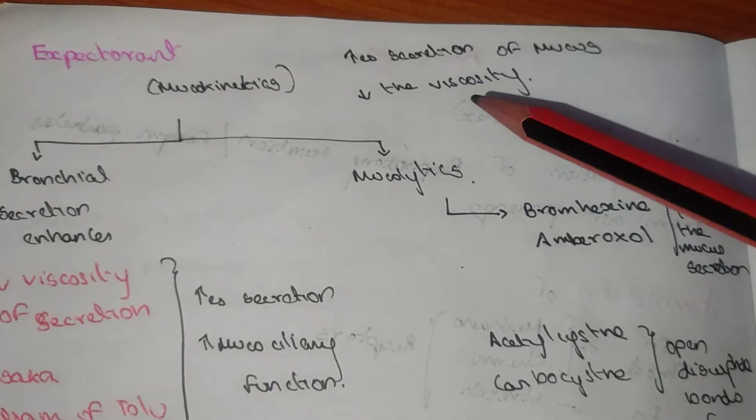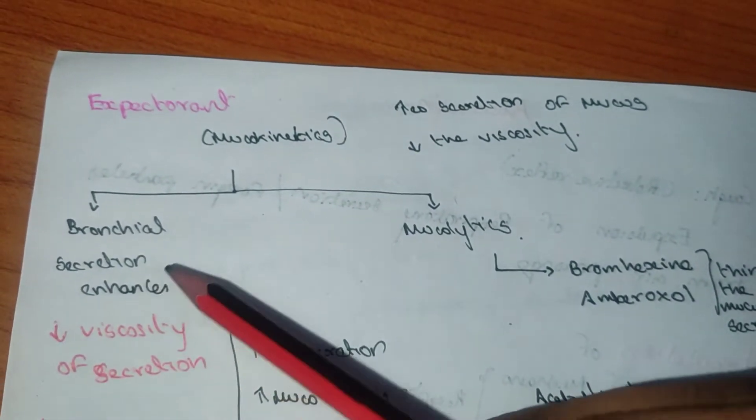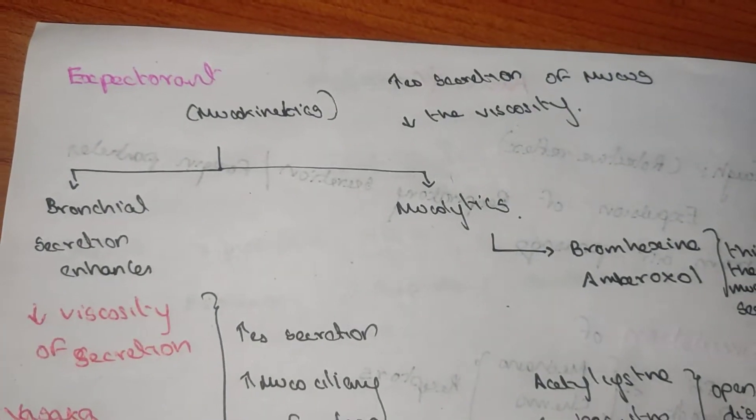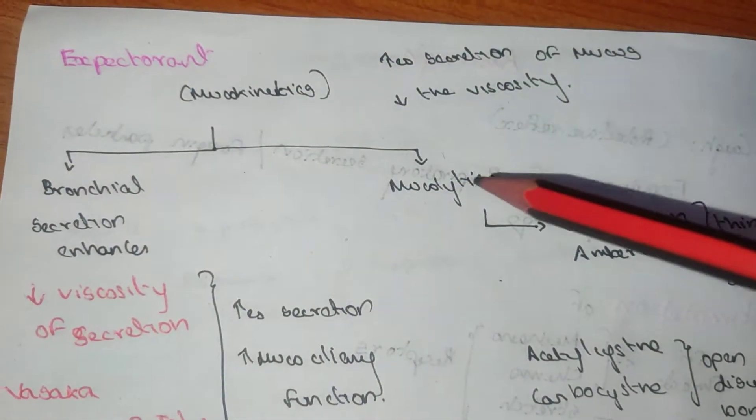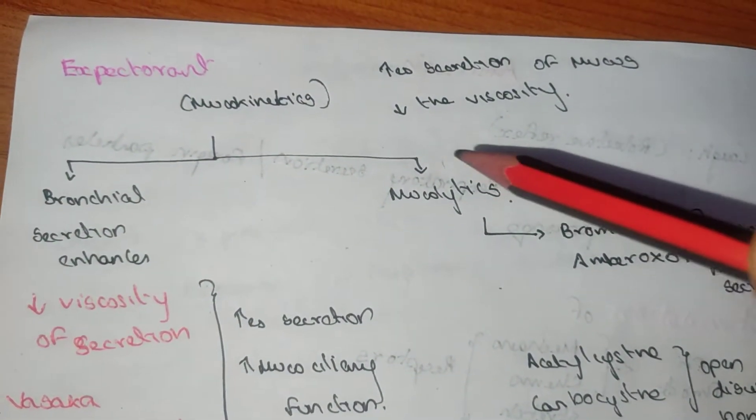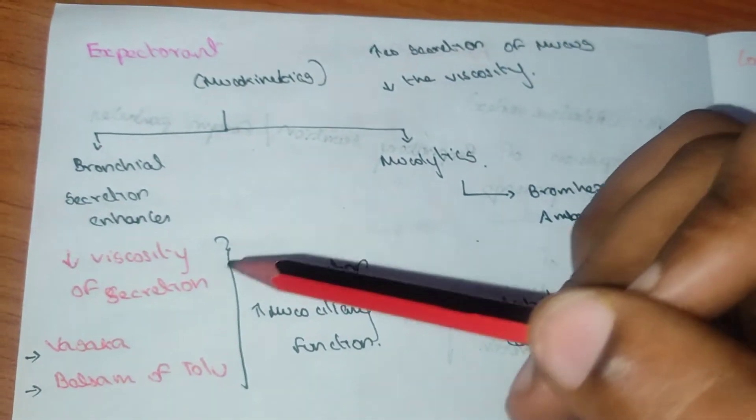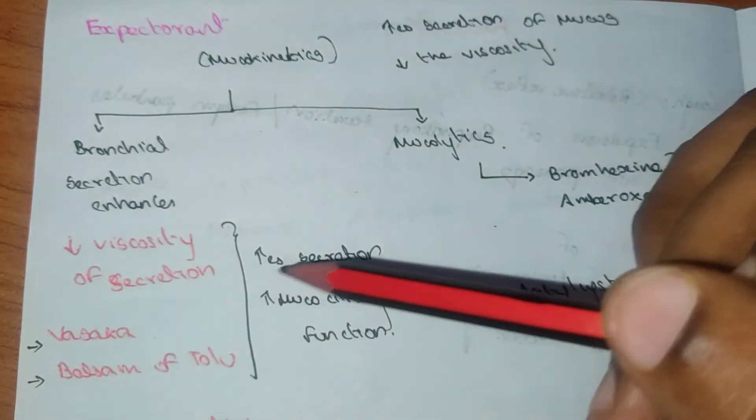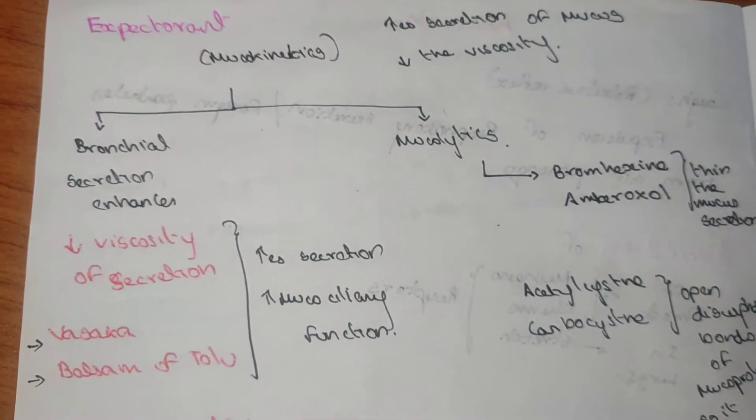In bronchial secretion, expectorant increases the bronchial secretion and decreases the viscosity, which is known as mucolytics. Bronchial secretion decreases the viscosity of the secretion, which are Vasaka and Balsam of Tolu. Here there is increased secretion and increased mucociliary function.